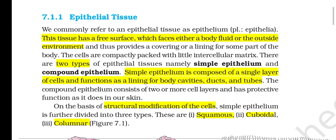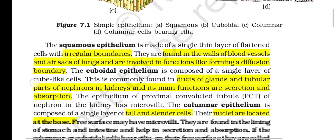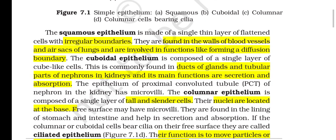There are two types of epithelial tissues: simple epithelium and compound epithelium. Simple epithelium is composed of a single layer of cells and functions as a lining for body cavities, ducts and tubes. Compound epithelium consists of two or more cell layers and has a protective function, as in our skin. Simple epithelium is further divided into three types: squamous, cuboidal and columnar. Squamous epithelium is made of a single layer of flattened cells with irregular boundaries, found in the walls of blood vessels and air sacs of lungs, involved in forming a diffusion boundary.